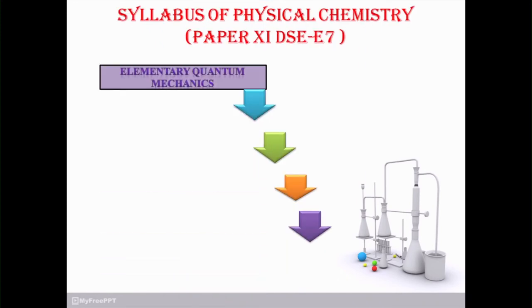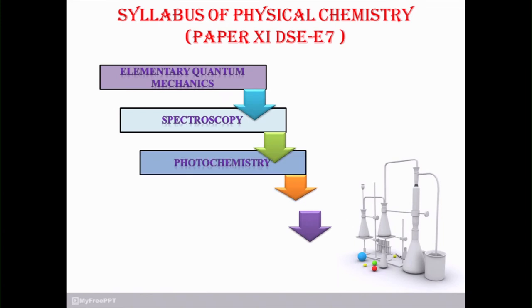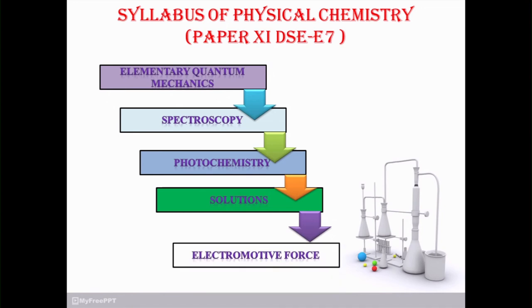Now go for the syllabus of physical chemistry. Paper number 11 with the code of DSC E7. First chapter is elementary quantum mechanics. Second spectroscopy. Third number photochemistry. Four number solution chapter. And last number very important that is called electromotive force.